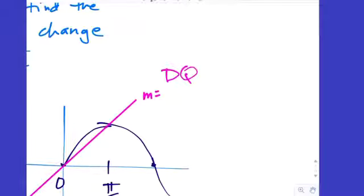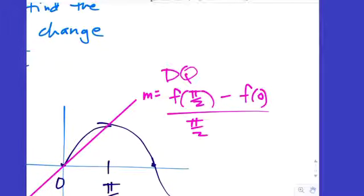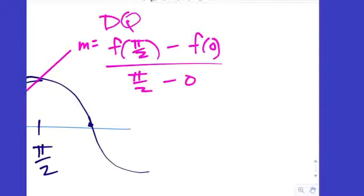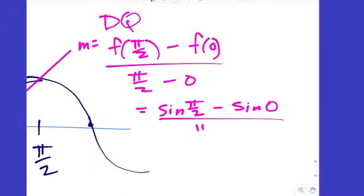I gave our function a name: f of x. So it's f of pi halves minus f of 0, all over pi halves minus 0. On the quiz next week, I want to see the difference quotient — even though pi halves minus 0 is pi halves, I still want to see the minus 0. So now we plug in: sine of pi halves minus sine of 0, all over pi halves.